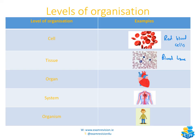Building on from that, the next level is an organ. An example of that would be our heart — we also have things like our kidneys, our skin, our brain, and so on. After that we have an organ system — our red blood cells, our blood, and our heart are all part of the circulatory system. And finally, once we have a group of systems working together, we end up with an organism, which would be something like a human.